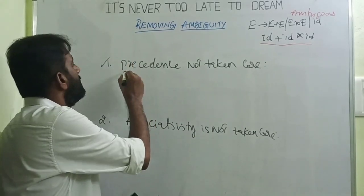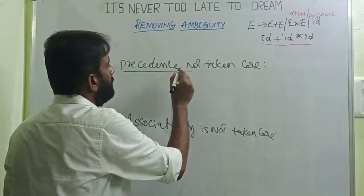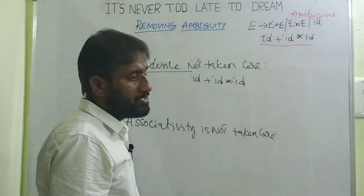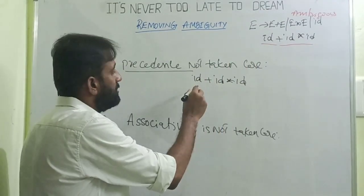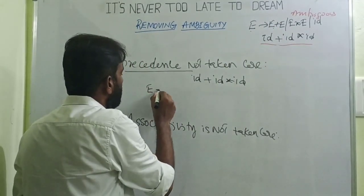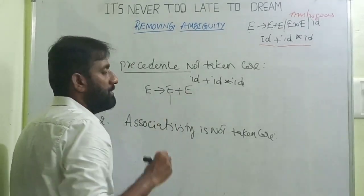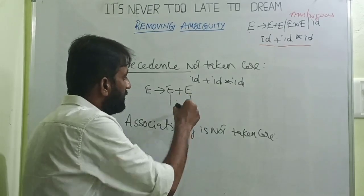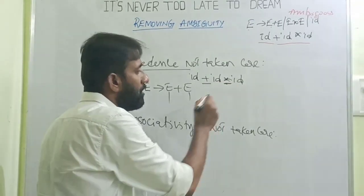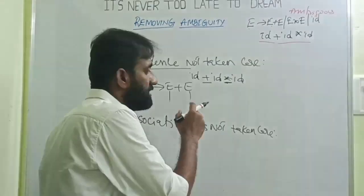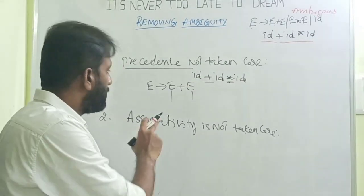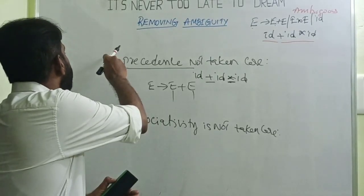Let's see what precedence of operators means. When deriving id+id*id, we replace E with E+E or E*E — plus and star are treated with equal precedence. We are not giving higher precedence to star over plus or vice versa. That is the precedence problem with this grammar.